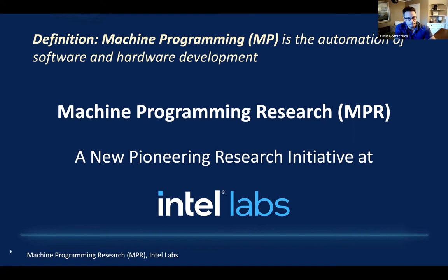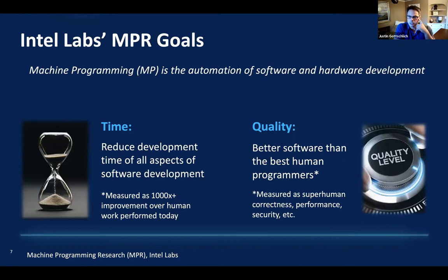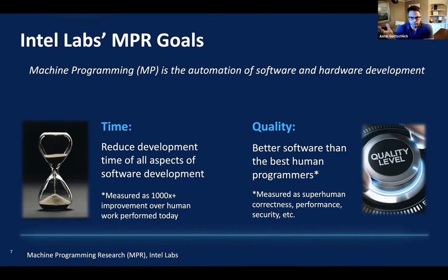Machine programming research is a new pioneering research initiative at Intel Labs — basically we plan on doing it for the next several decades. We think of it as a disruptive new technology. The core tenets of MPR are around two areas: time and quality. Being a pioneering research effort, we have to have audacious aspirations. The first aspiration is to exceed 1,000x productivity over what humans can do today.